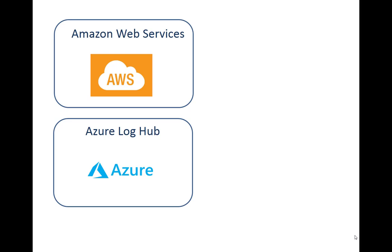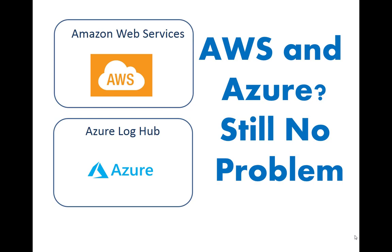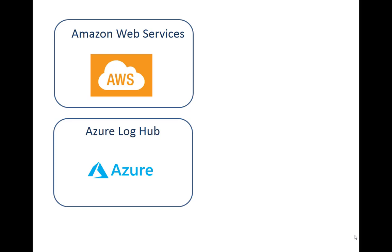Next up is Azure — Microsoft's answer. The native interface is called the Log Hub. It is compatible with QRadar hardware and software, and QRadar can be built entirely inside Azure. Instead of there being an app, you just Google 'QRadar and Azure' for the install details. There's been some weird misinformation about what runs where and what's compatible, but we have real live QRadar customers using both AWS and Azure right now, parsing logs with no issues.